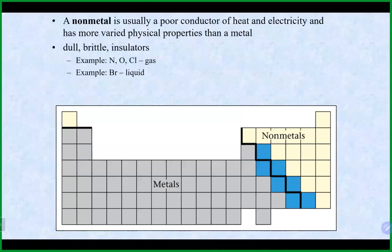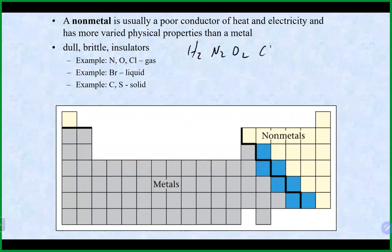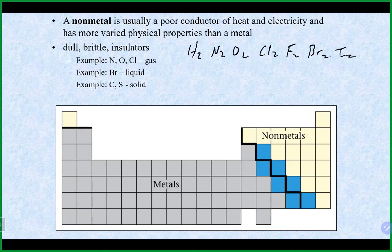Nonmetals have pretty much the opposite characteristics of metals: they are usually poor conductors of heat and electricity, and they exist in a variety of states. Nitrogen, oxygen, and chlorine are gases; bromine is a liquid; carbon and sulfur are solids. Many nonmetals are diatomic molecules — H₂, N₂, O₂, Cl₂, F₂, Br₂, I₂.